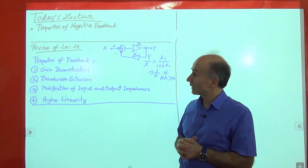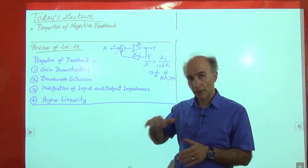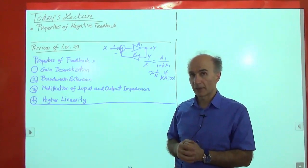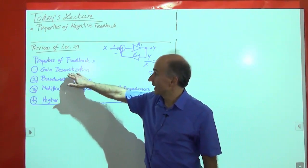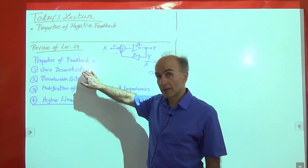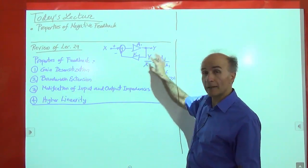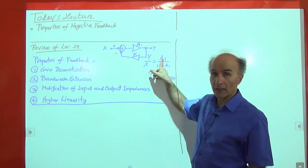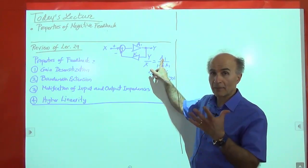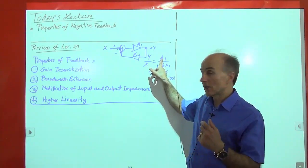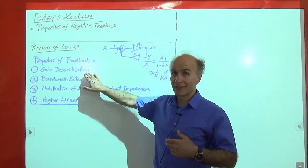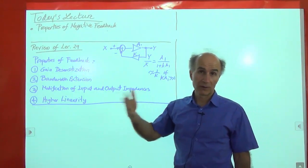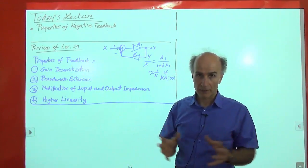We listed the properties of feedback without going into too much detail. We saw in particular four interesting benefits. One is what we called gain desensitization, and all that means is that the closed-loop gain is only a weak function of the open-loop gain. So anything that affects the open-loop gain doesn't affect much the closed-loop gain. The closed-loop gain is not very sensitive to changes in A1, for example due to temperature or the supply voltage, and so forth.